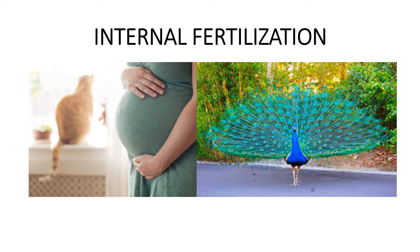Internal fertilization. Vertebrate animals, such as reptiles, birds, mammals, and most insects, do not return to water to mate. So the male must place the sperm cells directly inside the female's body. Just like humans, the males and females have special parts that promote reproduction. The male has an organ which he can insert into an opening in the female which receives the sperm.